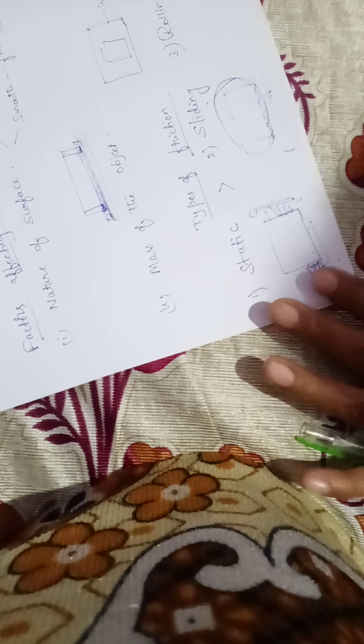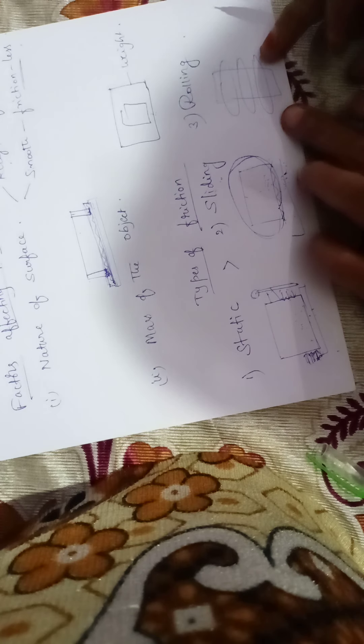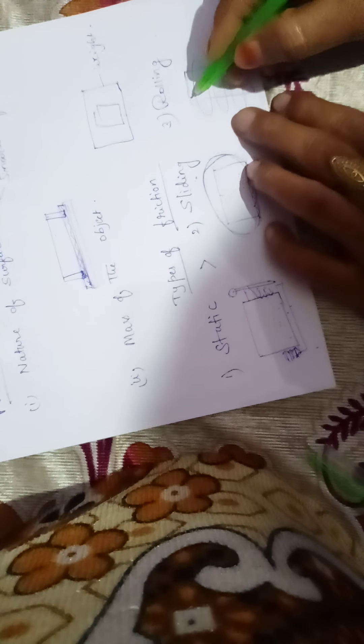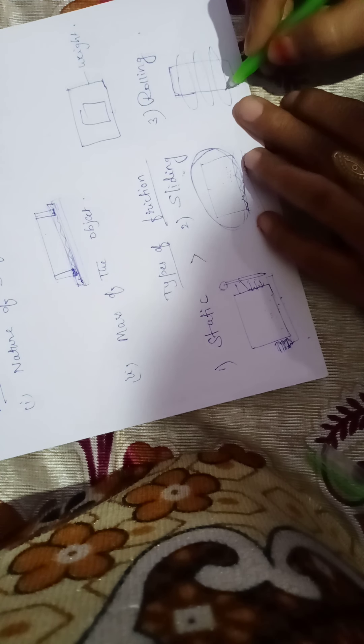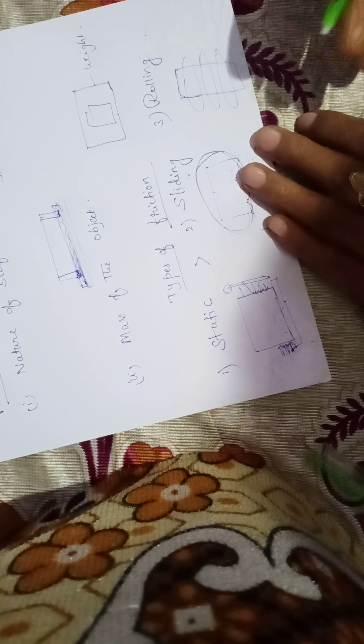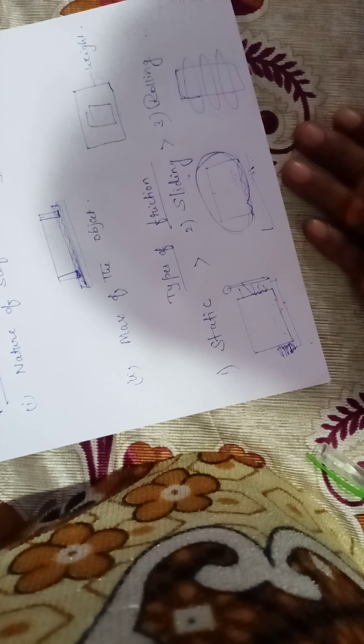What is rolling friction? It is the force acting between two surfaces when the object is rolling. For example, if you keep rollers under a heavy object and push, you can move it easily. That is why heavy objects use rollers, and vehicles like cars and trucks are provided with wheels to make movement easier.